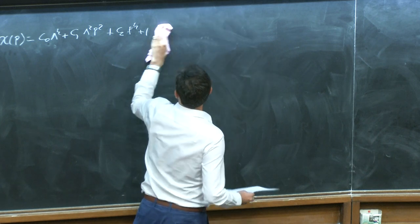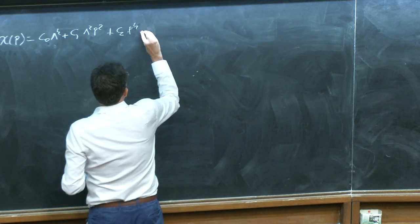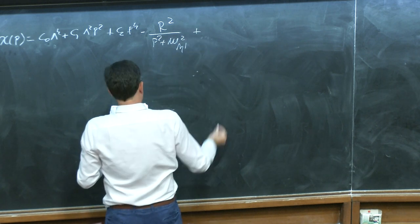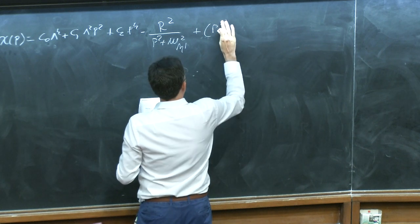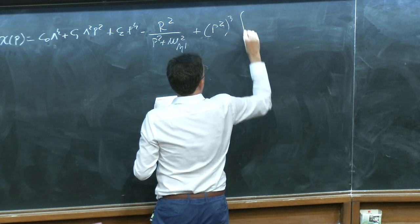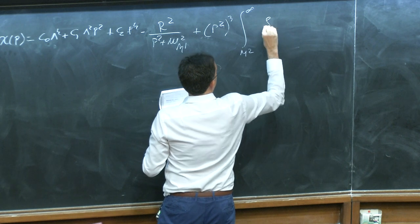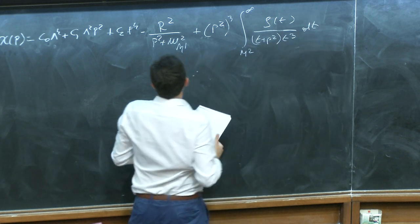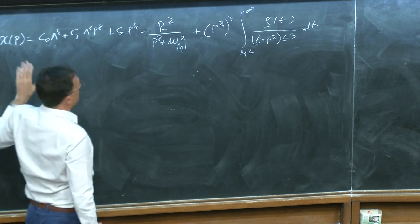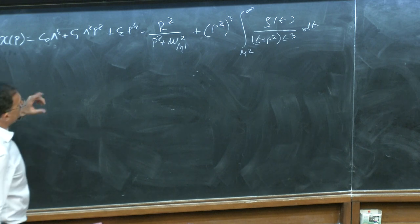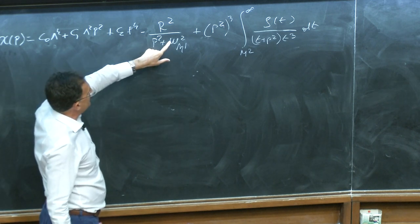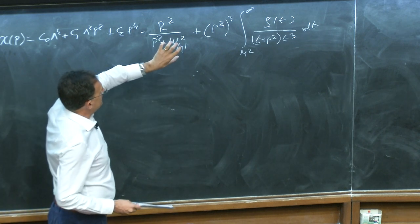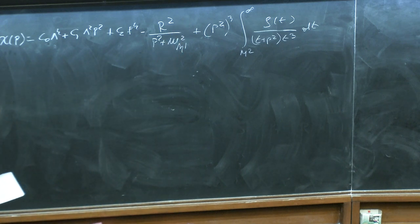We isolate the contribution from the lightest particle with the quantum numbers of χ, which we call η′. From the Ward identity we saw before, in the large-N_c limit this mass must go to zero because η′ becomes a Goldstone boson. So for large enough N_c, η′ is the lightest particle and the rest are heavier.